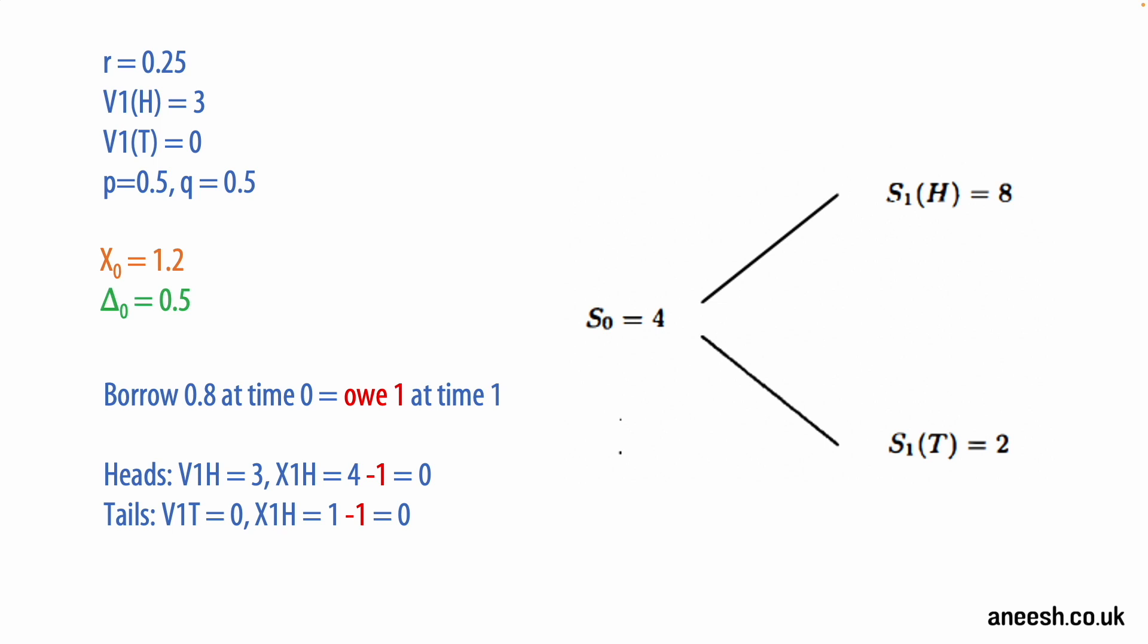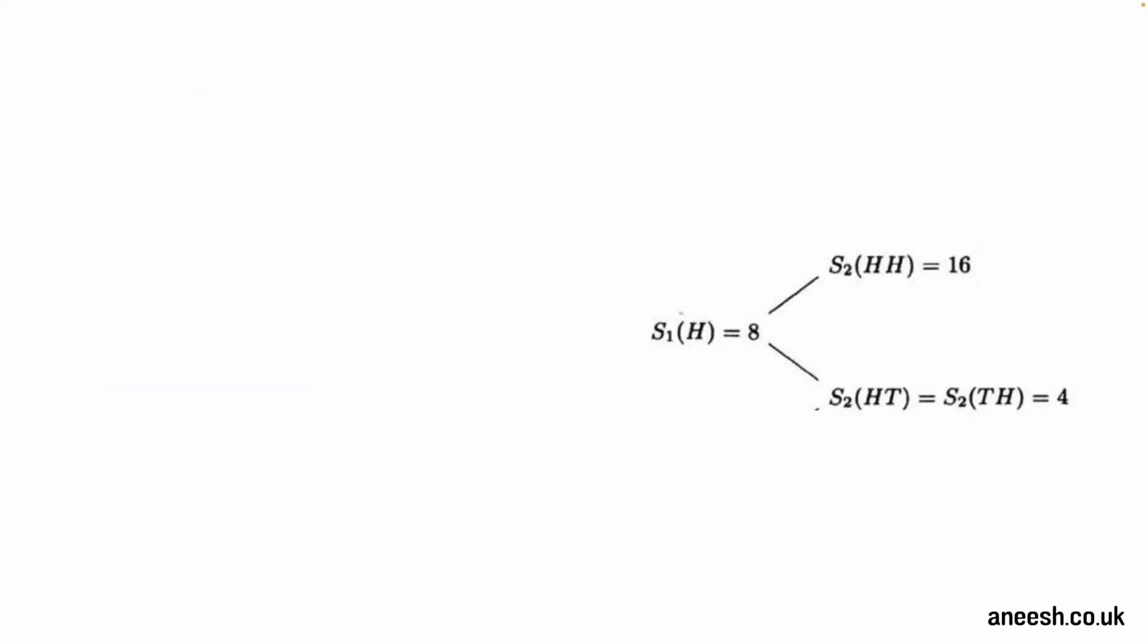Similarly, if tails is flipped then the option is not exercised as it's worthless, the stock value is 1 and the cash position in the money market is also negative 1, and that leads to the same portfolio value for the agent. We can now take a look at how this position changes with the second time period to the option.